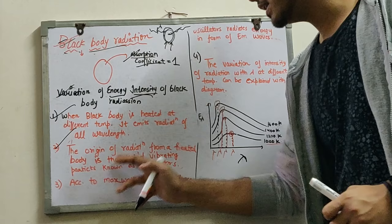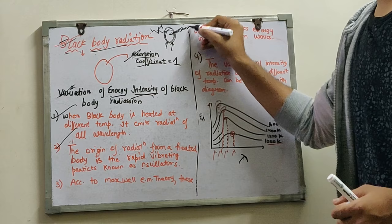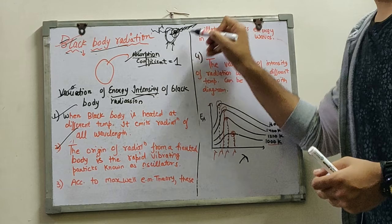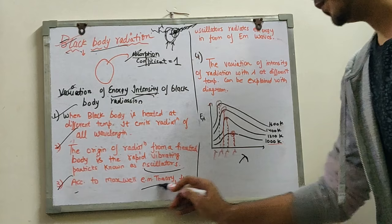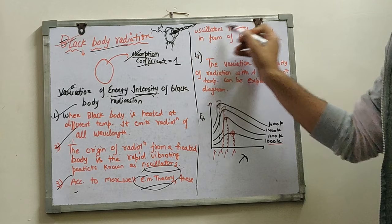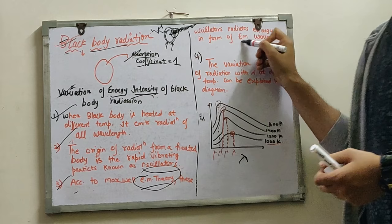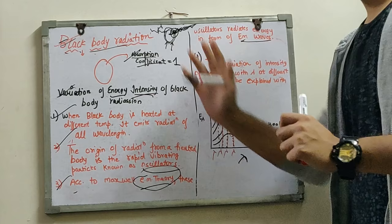The second point: the origin of radiation from a heated body is the rapidly vibrating particles known as oscillators. When the particles vibrate, these vibrators are called oscillators. According to Maxwell's electromagnetic theory, these oscillators radiate energy in the form of EM waves — energy is released in the form of electromagnetic waves. These three points are now clear.